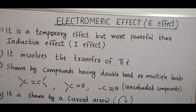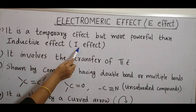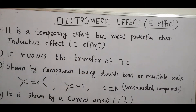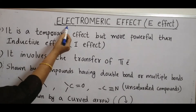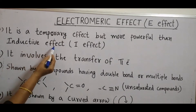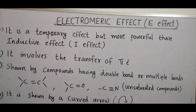In this video, we will discuss the Electromeric effect, or E effect. Electromeric effect is a temporary effect but more powerful than the inductive effect, or I effect. It gets activated only in the presence of an attacking reagent, so it is a temporary effect. When both inductive effect and electromeric effect come into play, electromeric effect dominates over inductive effect.